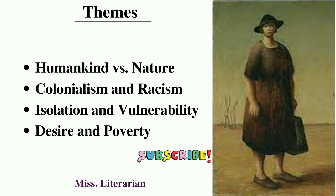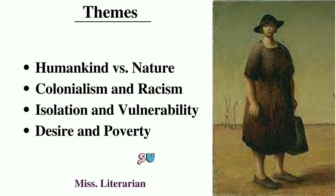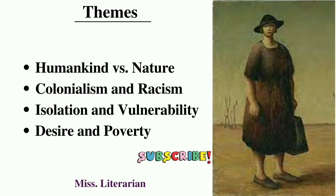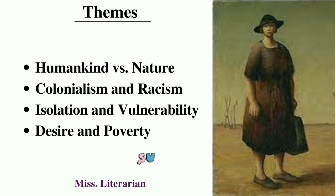Next is colonialism and racism. There are many European settlers who arrive in the Australian landscape in order to take the land from the Aboriginals. Here in the story, King Jimmy is an Aboriginal man who builds a house for the bush woman. The bush woman takes help from King Jimmy for everything, which shows the attitude of the colonizers. They try to take the land from the Aboriginals, treat them like slaves and servants, and use them for petty jobs.